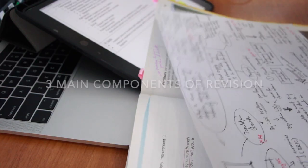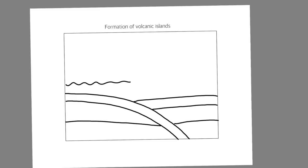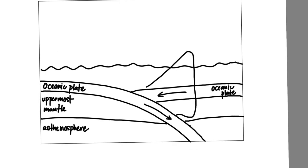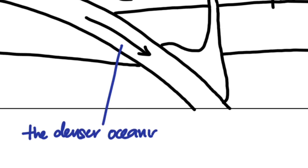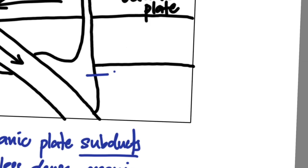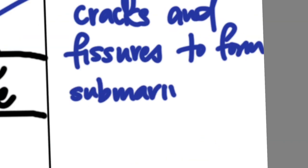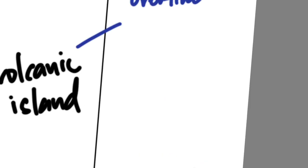When it comes to the different components of revision, I would typically break them up into three main parts. The first one, and the most important, is content. Content is so important because that's the fundamentals of learning geography. You've got to know your geographical key terms. For instance, if you're given a question that asks you to explain the formation of volcanic islands at an oceanic-oceanic convergent plate boundary, the key terms you'd use would be: compressional force, denser oceanic plate subducts, melt, magma, cracks and fissures, submarine volcanoes, then volcanic islands.